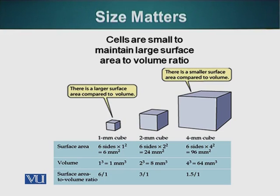Let's look at the general formula. The surface area of a cube is calculated by adding the area of its six sides. So if a cube is one millimeter in each dimension, the surface area will be six square millimeters. If we calculate the volume of this cube, it will be one cubed, which is also one. So the surface area to volume ratio is six to one.